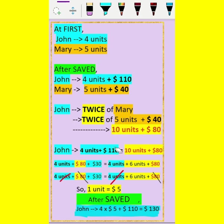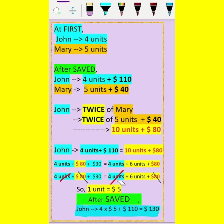and John in yellow. We split $110 into $80 and $30, and 10 units into 4 and 6. So we can cross out 4 units and $80 on both the left and right sides. What we have left is $30 equals 6 units, which means 1 unit equals $5.